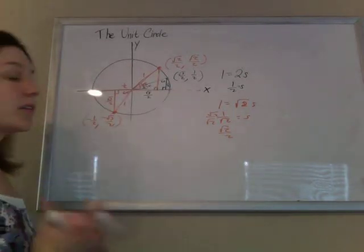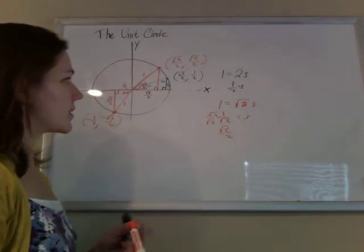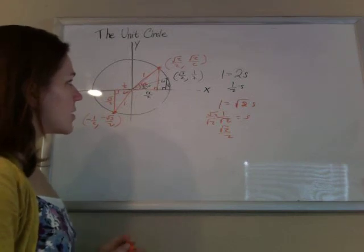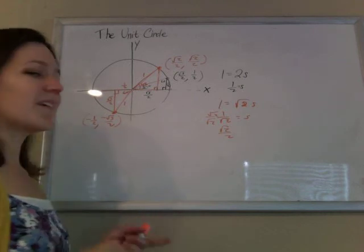So you can generate the whole unit circle just knowing your 45-45-90 triangles and 30-60-90 triangles. I'll show you a shortcut way to fill it in and how that relates to sine and cosine in other videos.